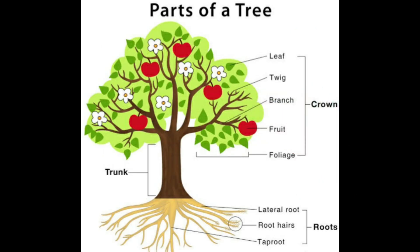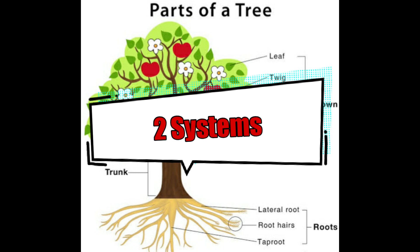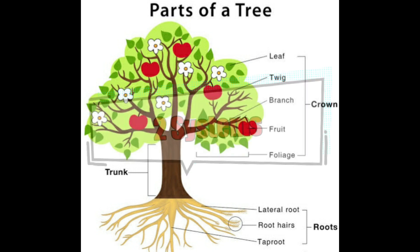Now let's start with the parts of a tree. Every plant has two parts, two systems: root system and the shoot system.